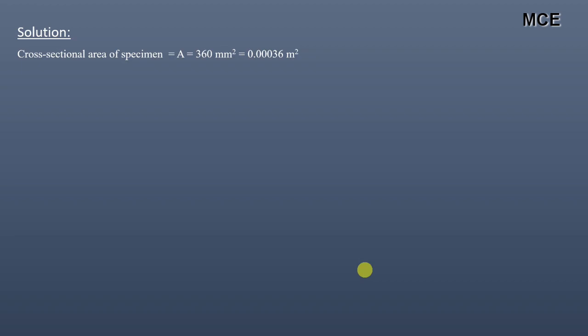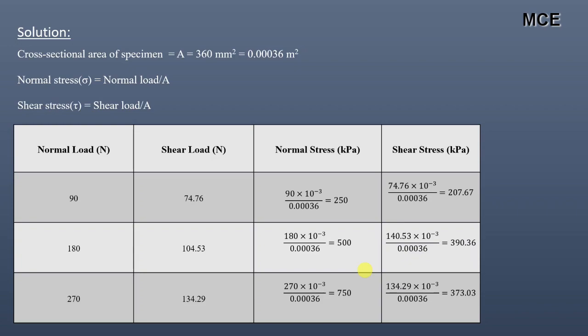Normal stress is given as normal load divided by cross-sectional area, and shear stress is given as shear load divided by cross-sectional area. First we will convert the normal load and the shear load into normal stress and shear stress. So 90 Newton of normal load becomes 250 kilopascal of normal stress, by dividing 90 × 10⁻³ by the cross-sectional area 0.0036.